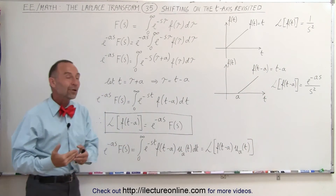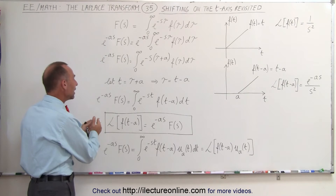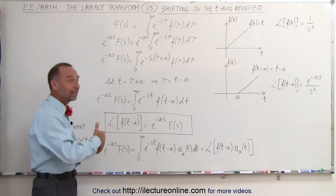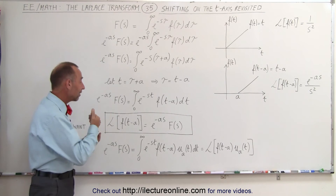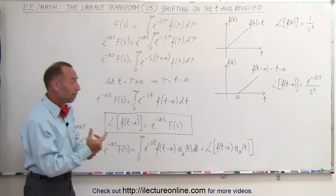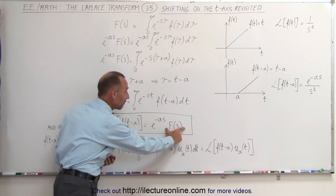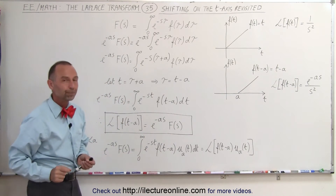So now we know: whenever there's a shift in the time domain, we can simply take the Laplace transform and multiply the original Laplace transform F of s by the term e to the minus as.